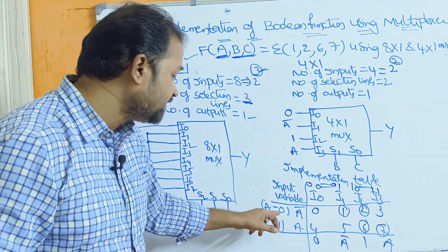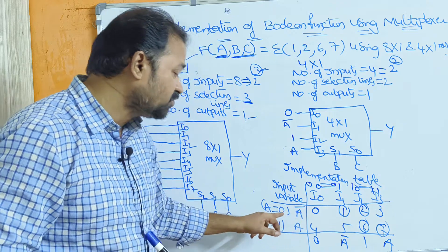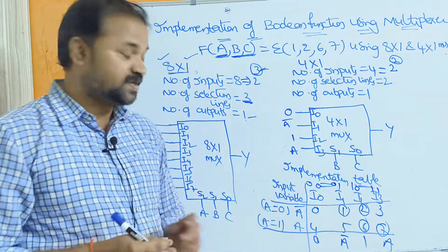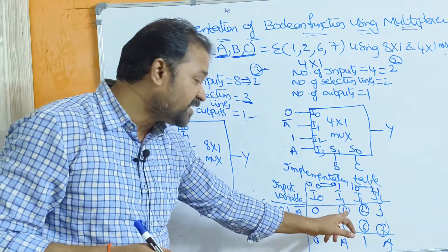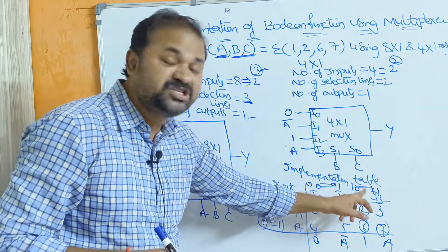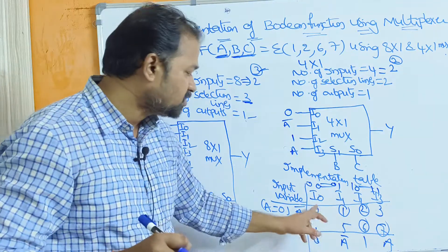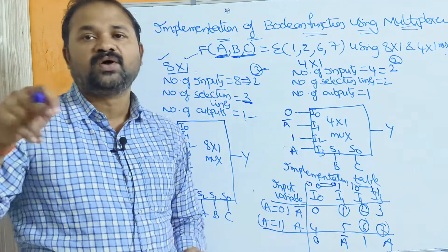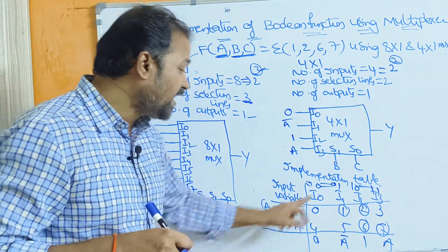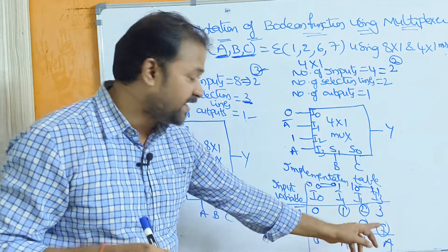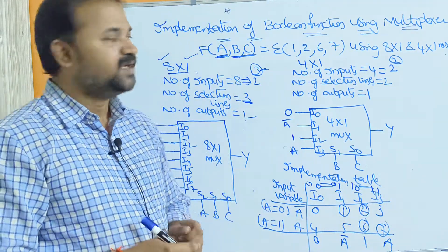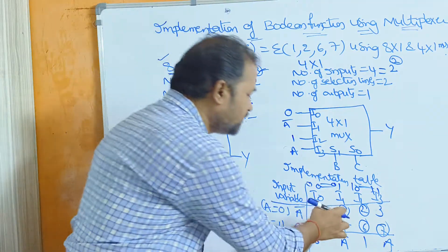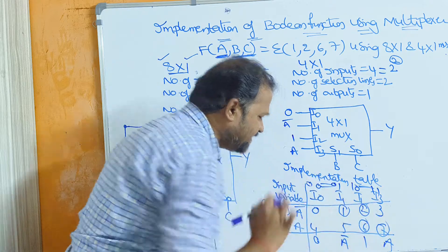Looking at the table: with a=0, the combinations 000, 001, 010, 011 in decimal notation are 0, 1, 2, 3. With a=1, the combinations 100, 101, 110, 111 are 4, 5, 6, 7. The minterms from the problem are 1, 2, 6, and 7, so we circle those.